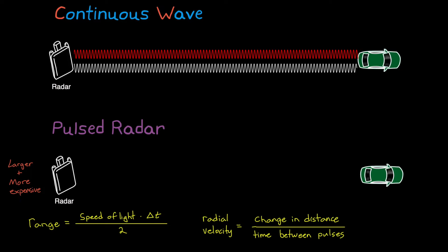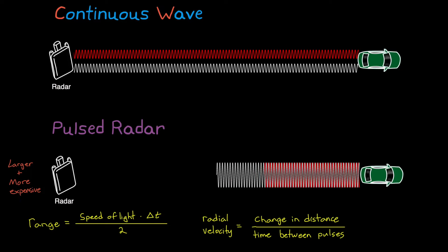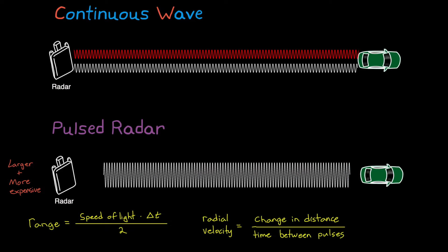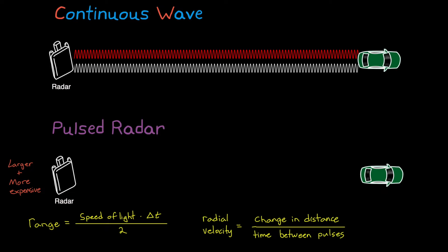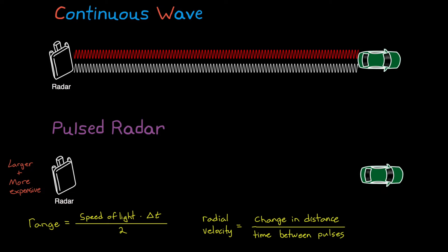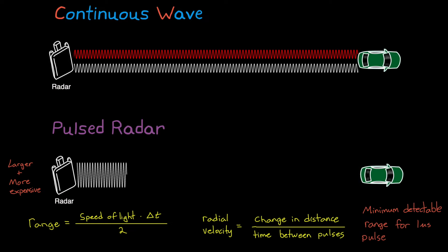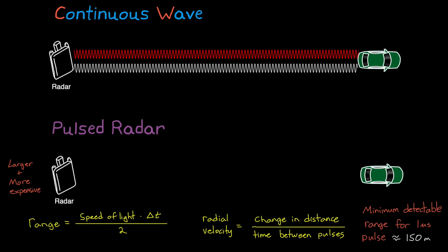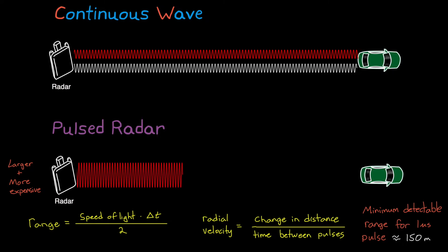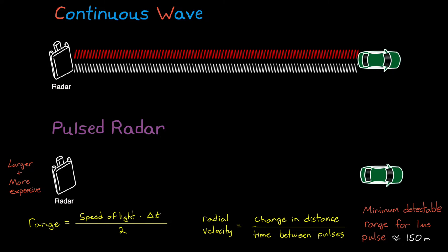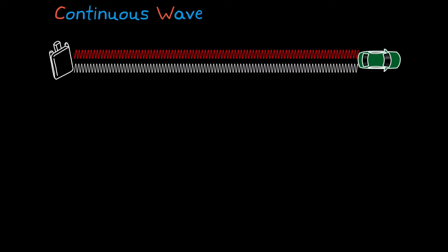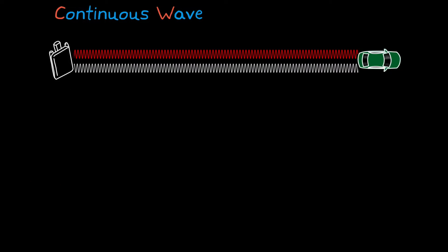Another reason is that pulsed radars have a minimum range that can be detected of about half the length of the pulse, because the trailing edge of the pulse must be emitted before the leading edge returns. As an example, the minimum detectable range is about 150 meters for a 1 microsecond pulse. Since autonomous vehicles usually need to measure objects within a few meters and have cheaper and smaller electronics, continuous wave tends to be the best choice.